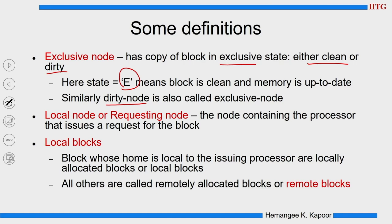Then we have a local node. Local node is the node containing the processor which issues the request. So if P1 is issuing the request, the node which houses P1 is called the local node. Local blocks are blocks whose home node is local — all the blocks whose addresses are in your own memory slice are called local blocks, they are locally allocated. All other addresses which are not in your memory bank are called remotely allocated blocks or remote blocks.